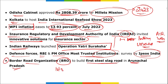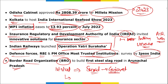The Border Roads Organisation (BRO) will build the first steel slag road in Arunachal Pradesh. The first steel slag road on a pilot basis was developed in Surat, Gujarat. Gujarat is also becoming a manufacturing hub for semiconductor chips — Foxconn and Vedanta signed an MoU for this. Manufacturing of artificial diamonds has also shifted from Mumbai to Gujarat.